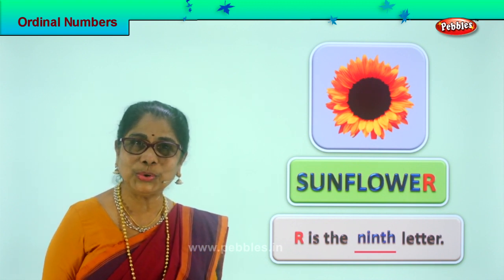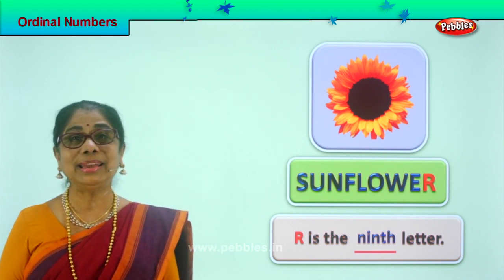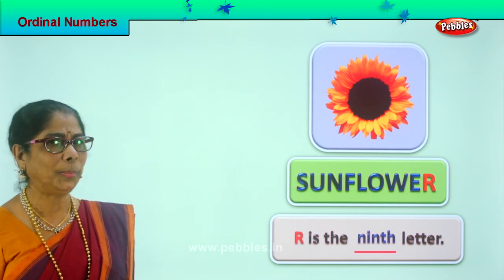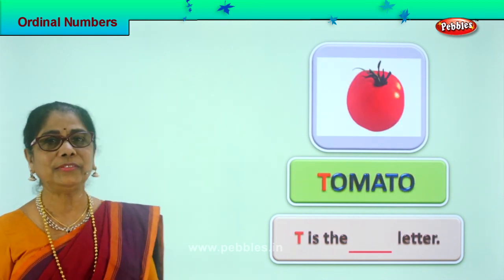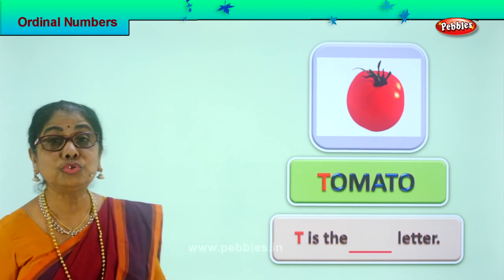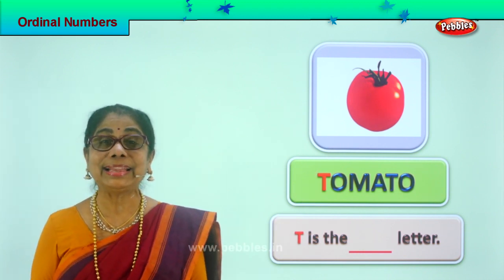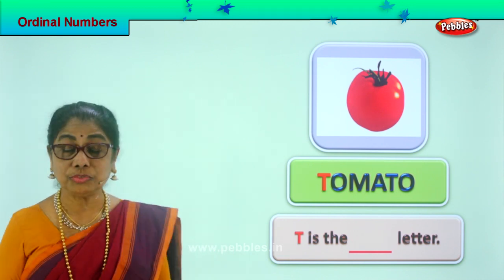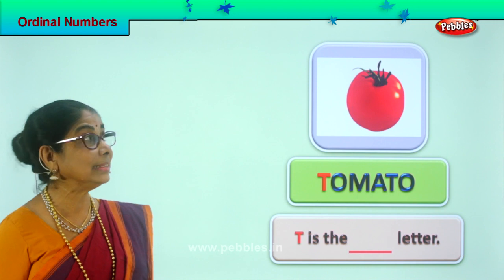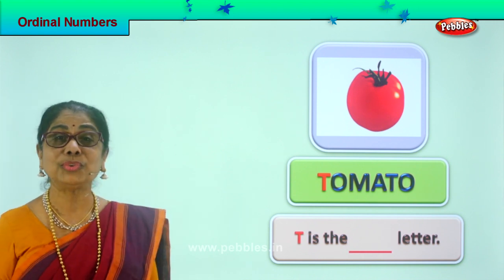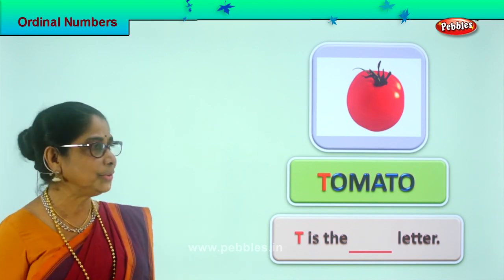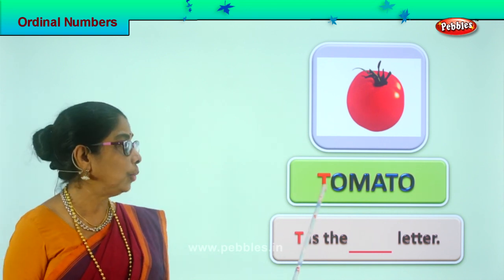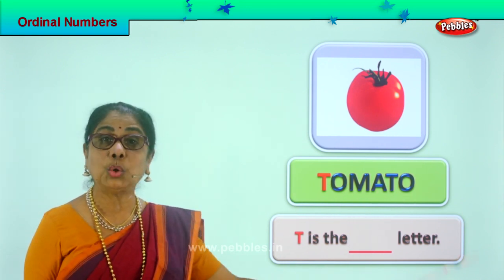Did you enjoy? Good. Ordinal numbers — we are learning, yes. Let's look at a new picture. See what you have here — juicy tomato! Yes, juicy tomato. You love it, right? You can also have the juice, you can have a lot of other things too — sauce. Let's spell tomato: T-O-M-A-T-O, tomato.